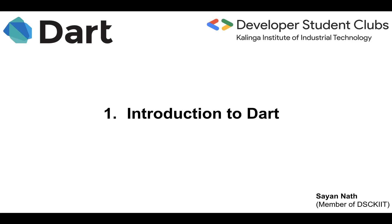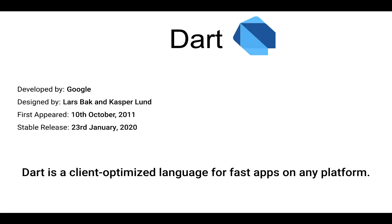Today is our first video on Dart, which is Introduction to Dart. Dart is developed by Google and it is designed by Lars Buck and Kasper Lund. It first appeared on 10th October 2011 and they released the stable version on 23rd January 2020. So, what is Dart? Dart is a client-optimized language for fast apps on any platform.